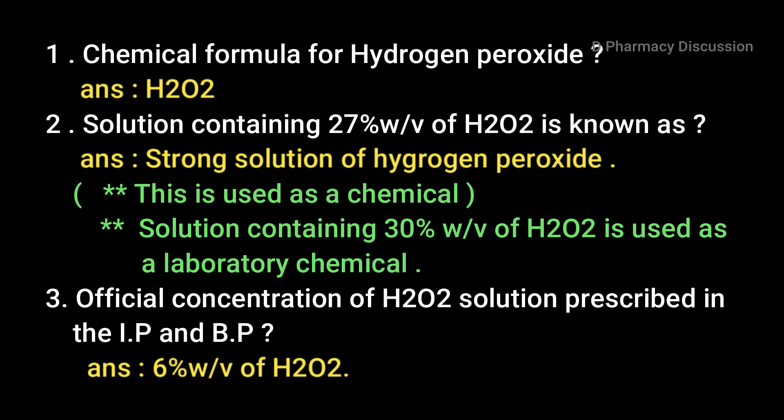Let's check out the answers. First question: chemical formula for hydrogen peroxide — answer H2O2. Second question: solution containing 27% w/v of H2O2 is known as strong solution of hydrogen peroxide, used as a chemical. The solution containing 30% w/v of H2O2 is used as a laboratory chemical. Third question: official concentration of H2O2 solution prescribed in the IP and BP — answer 6% w/v of H2O2.